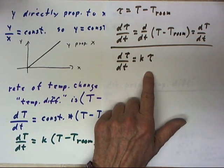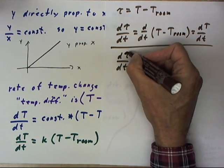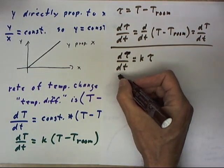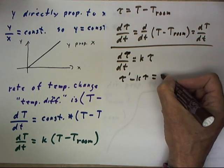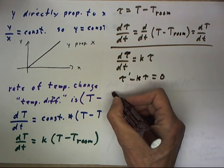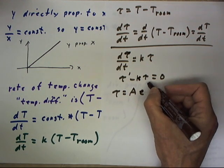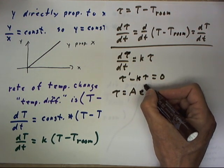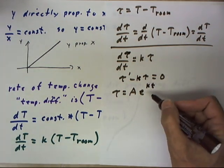This equation is first order linear and it's homogeneous, so this equation can be interpreted as tau prime minus k tau equals zero with solution tau equals A e to the kt.